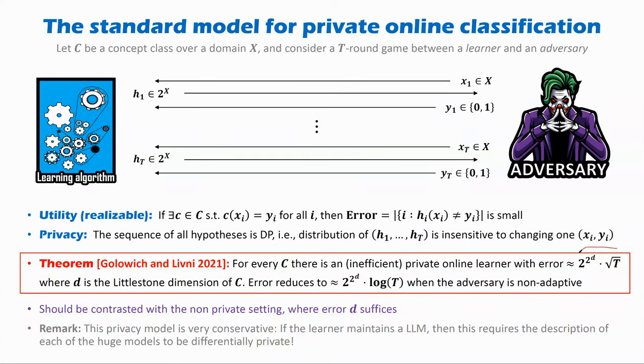First, this error should be contrasted with the non-private error, which is known to be d, not doubly exponential in d. Another remark is that this privacy model is very conservative. In particular, if this learning algorithm wants to maintain some large language model and base its predictions on this large language model, then that definition would require us to privatize all of the huge large language model we maintain together with all of its tons of parameters, which might be very hard.